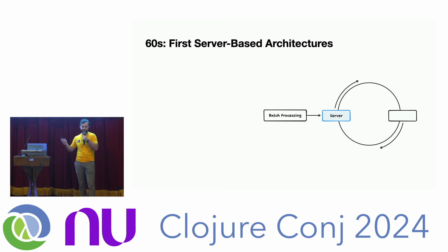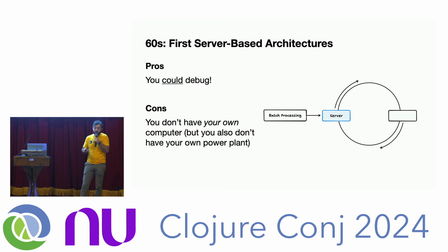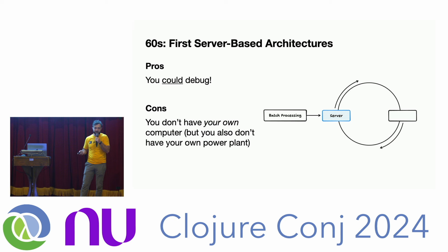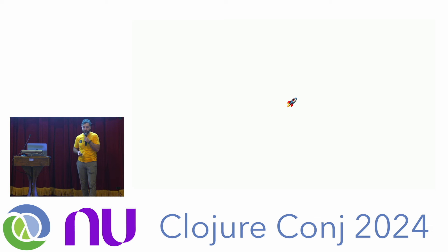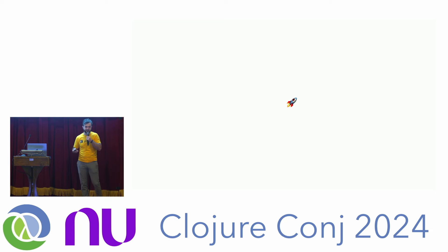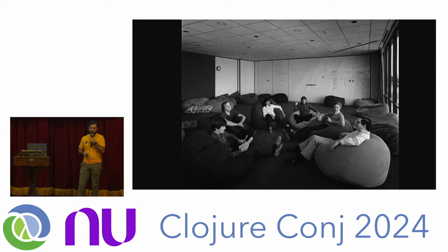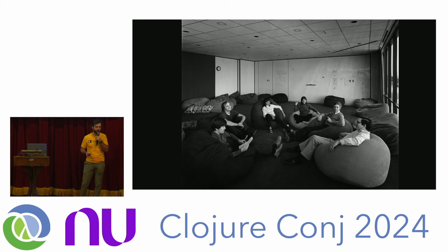When you squint at that, it's actually just like the first server-based architecture — our web apps from around 2005 have a very similar architecture. The benefit was you could finally debug your code without waiting days for an answer. You didn't have your own computer, but back then you also didn't have your own power plant. Now that you had a terminal, people started experimenting: what else can you do with computers? Can you draw? Can you communicate?